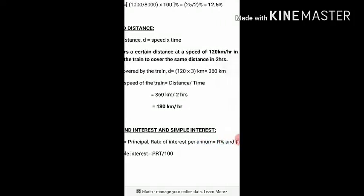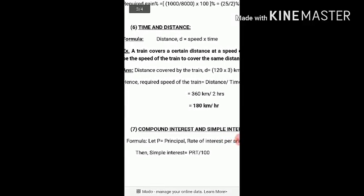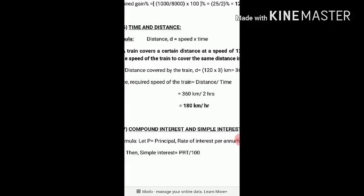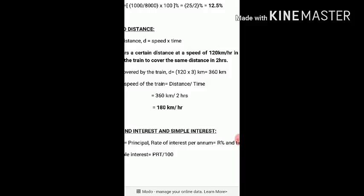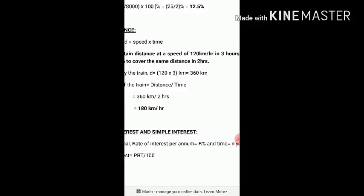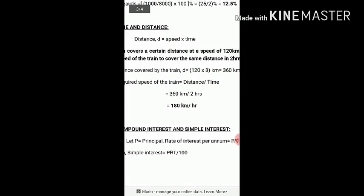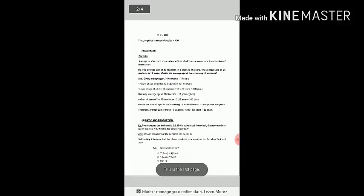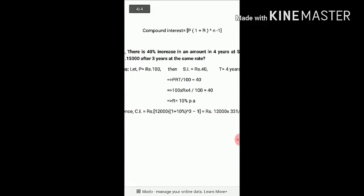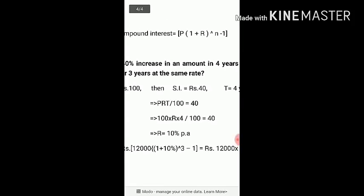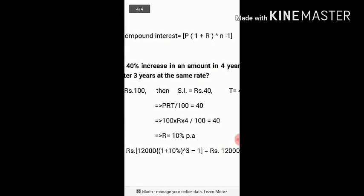Next is compound interest and simple interest. Suppose the principal amount is P, the rate of interest per annum is R%, and time is N years. The simple interest formula is P into R into T divided by 100. The compound interest formula is P into (1 plus R/100) to the power N, minus 1.